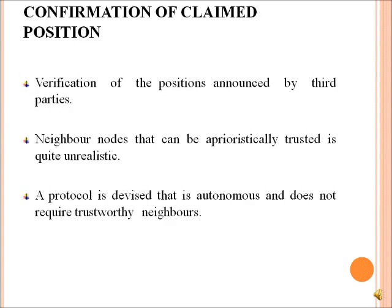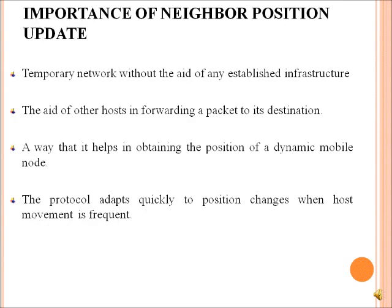Confirmation of the claimed position involves verification of the position announced by third parties. A protocol is derived that is autonomous and does not require trustworthy neighbors. Importance of neighbor position: confirmation includes the aid of any established infrastructure, the aid of the host in forwarding a packet to its destination, a way that helps in obtaining the position of a dynamic mobile node, and a protocol that adapts quickly to position changes when host movement is required.